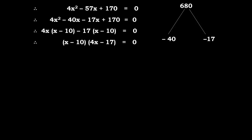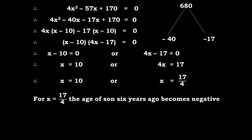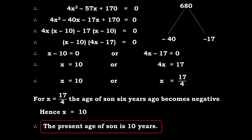From the next two terms take minus 17 common, giving bracket x minus 10 equals 0. So x minus 10 times 4x minus 17 equals 0. Therefore x equals 10 or 4x equals 17, giving x equals 17 upon 4. But if x equals 17 upon 4, the son's age 6 years ago becomes negative, which is not possible. So x equals 10. The present age of the son is 10 years.